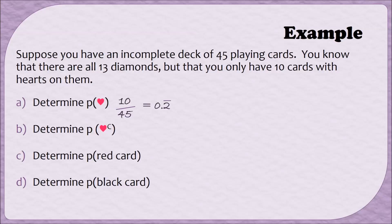For part B, we've been asked to find the probability of drawing the complement of a heart. In other words, drawing a card that is not a heart. One way to do this is to subtract our answer to A from 1. So I can do 1 minus 0.2 repeating, and that will give me 0.7 repeating. Another way that I could have determined this probability would be 1 minus 10 over 45, and that would give me 35 over 45, which would end up being the same thing, 0.7 repeating.